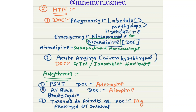For acute angina, by sublingual route, drug of choice is GTN or isosorbide dinitrate. For arrhythmia — PSVT, drug of choice is adenosine. For AV block with bradycardia, drug of choice is atropine. For torsades de pointes or prolonged QT interval, drug of choice is MgSO4.